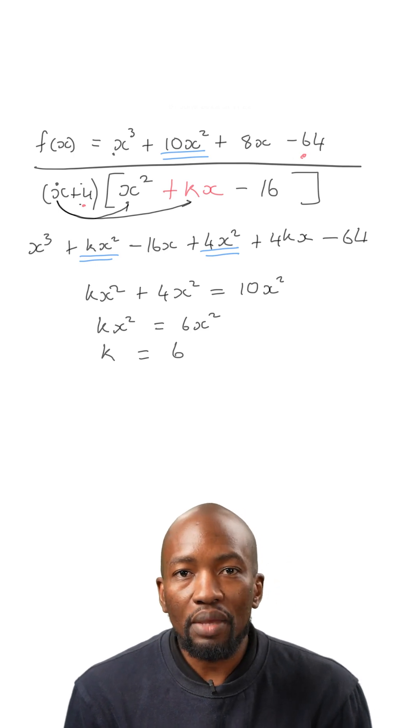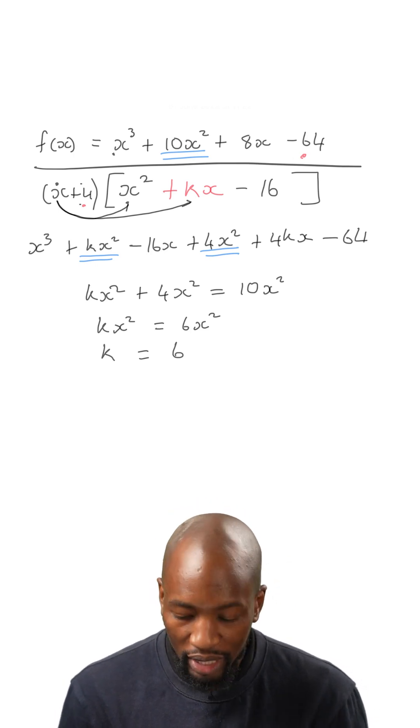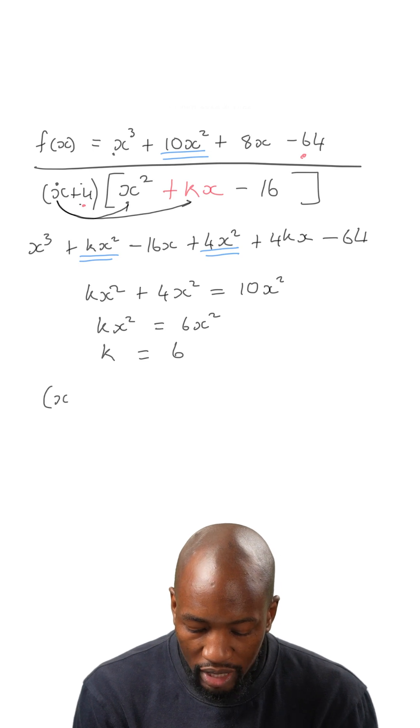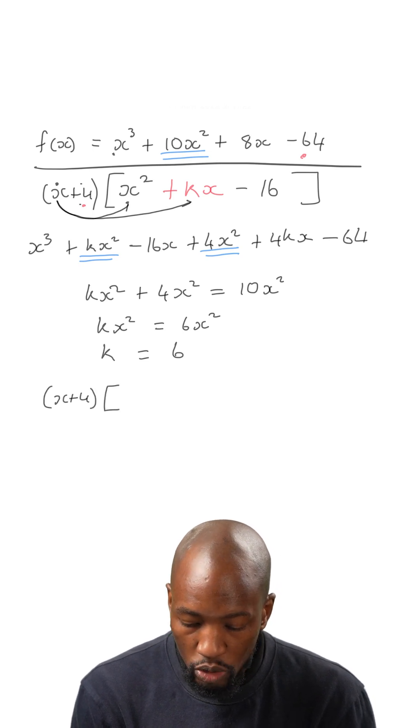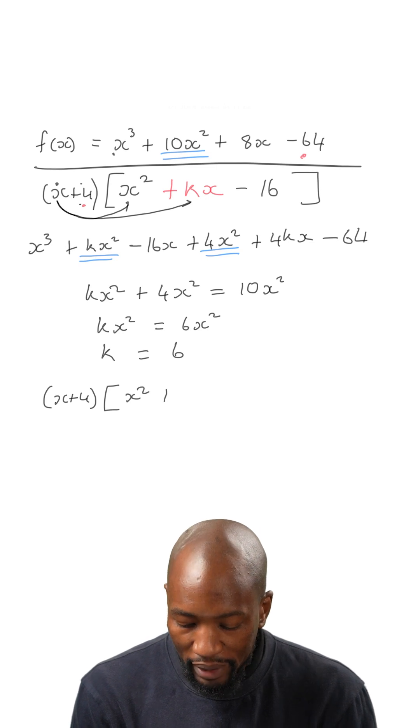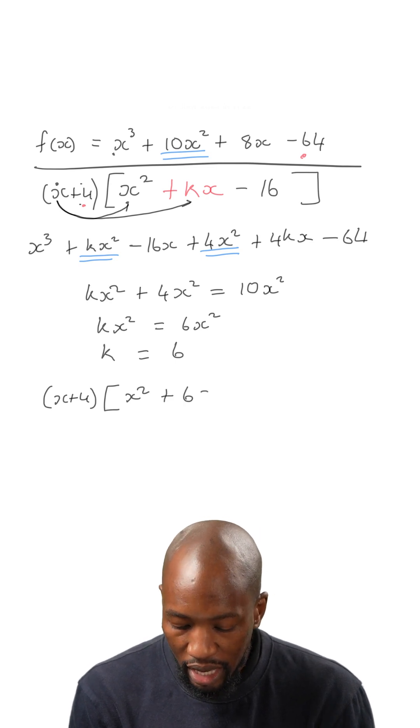This is what we can substitute in our block brackets. Remember we still have a factor of x plus 4 outside. Then in our block brackets, we have x squared plus 6x minus 16.